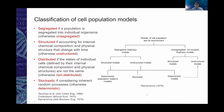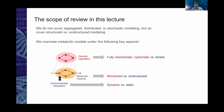This classification comes from Juccia et al. and Frederickson, Ram, and Tsuchiya — all from the University of Minnesota. This classification is still inspirational and found in textbooks. In this talk I will not cover segregated, distributed, or stochastic modeling, but will cover structured versus unstructured modeling, focusing on metabolic modeling with a uniform distribution of cells, and on whether models are structured or unstructured and how they are regulated.